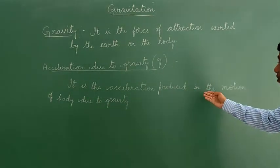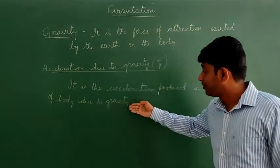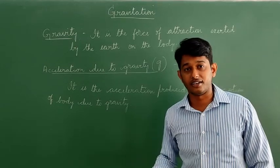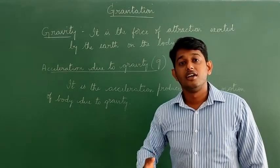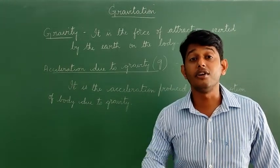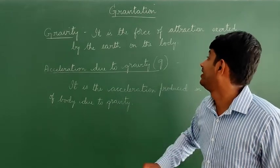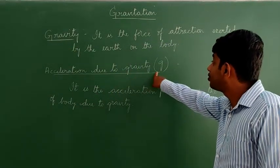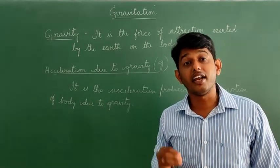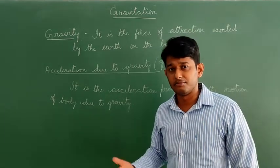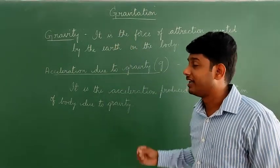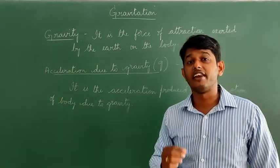We have learned many definitions in this chapter: gravitation, universal law of gravitation, gravitational constant, gravity, and acceleration due to gravity. All of these look similar to one another but are very different from each other. You should know all these definitions — they are very important.